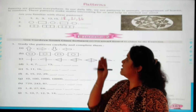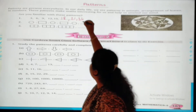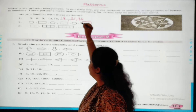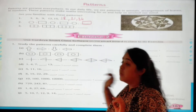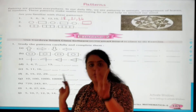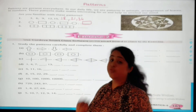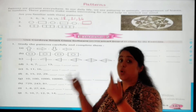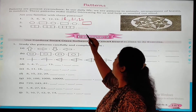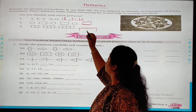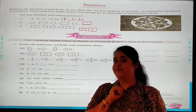The second example: circle, rectangle, circle, rectangle, circle — so next comes the rectangle. For the third pattern: two, three, four. In the first figure there are two squares, in the second figure three squares, in the third figure four squares. So now in the next figure, how many squares? Exactly — five squares: one, two, three, four, five. Done.